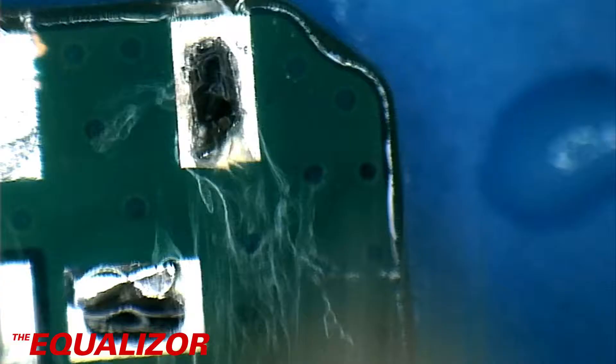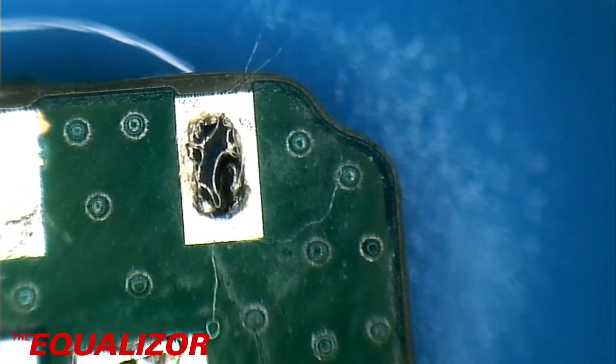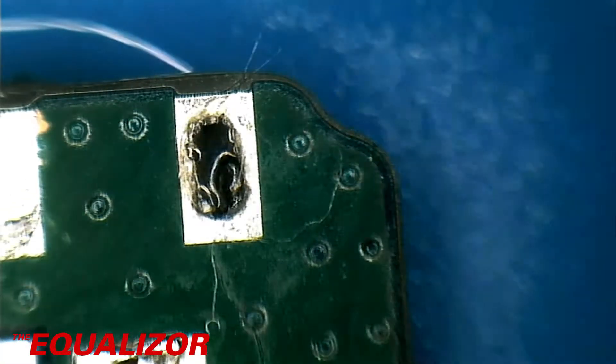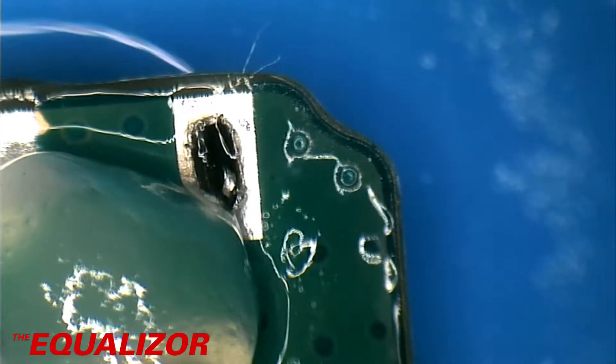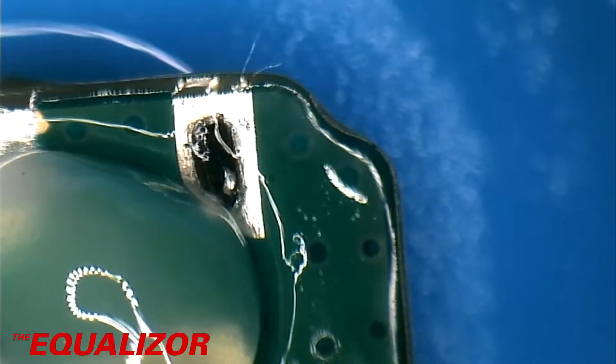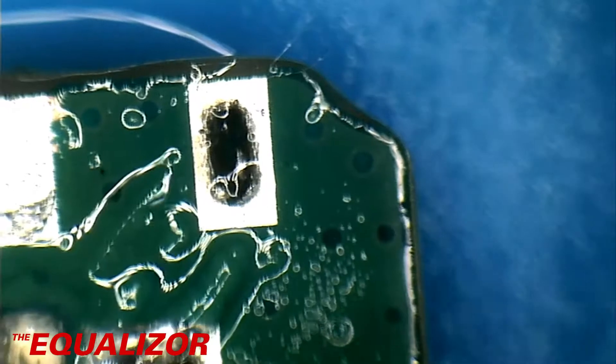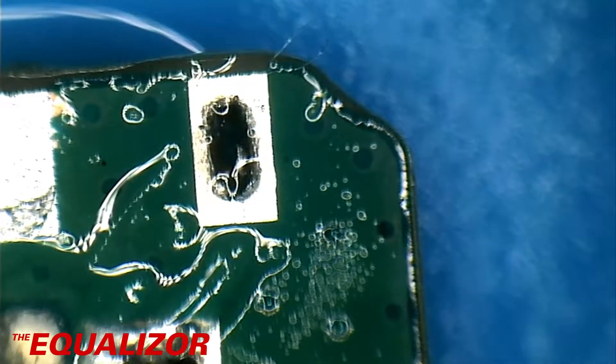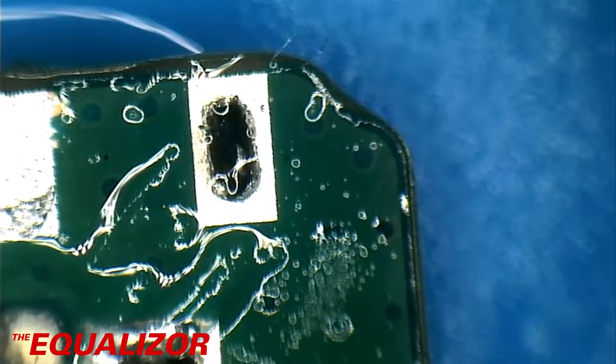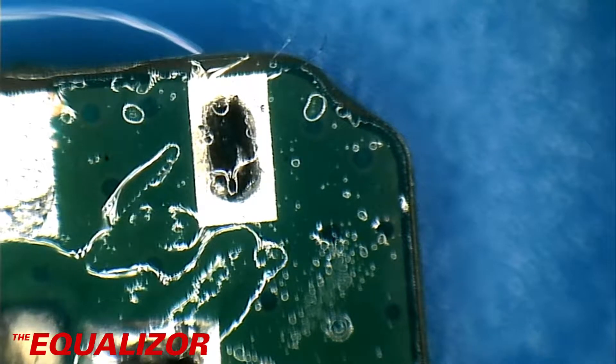Next thing to do would be to put the new socket on, just get that soldered on. We have a new socket here, and we'll put a little bit of flux on there. That is absolutely disgusting, and it gets everywhere, but never mind. Let's get that over there where we need it to be. And now, we put the socket on.